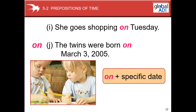So 'on' plus a specific date. For example: when's your birthday? When were you born? I was born on the 15th of August. So we use 'on' with a specific date.